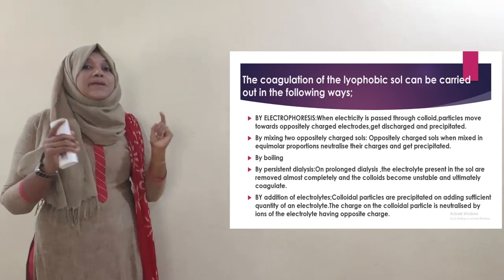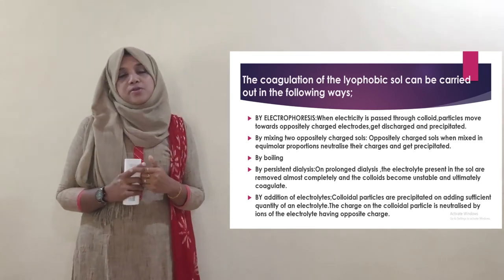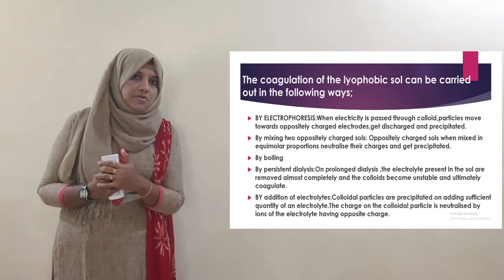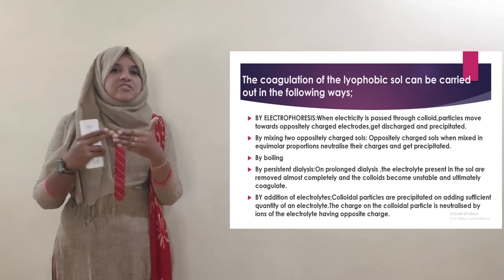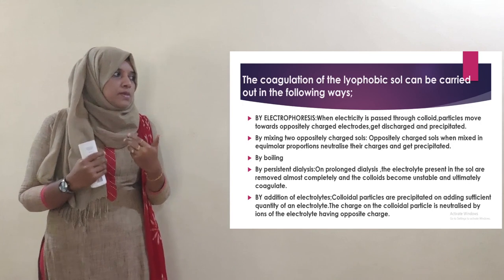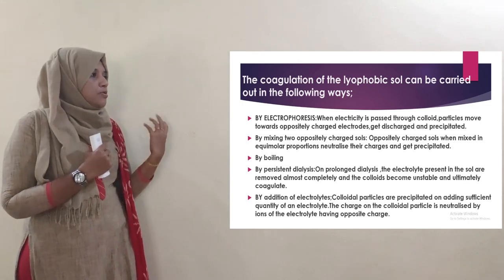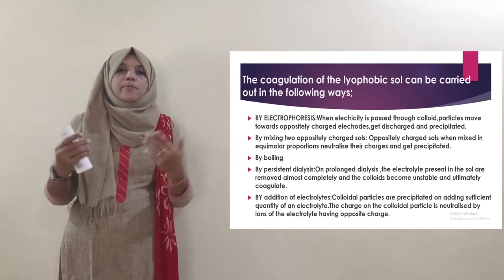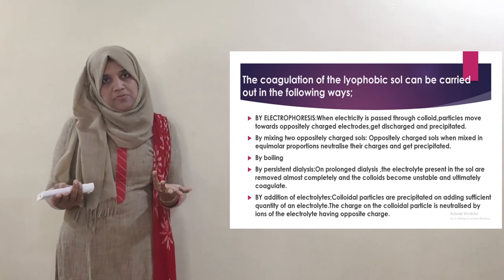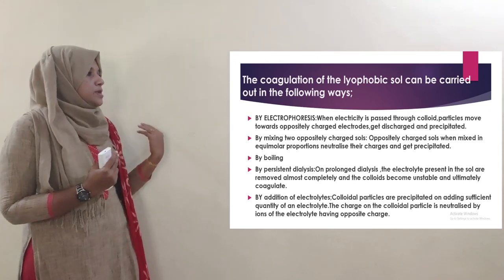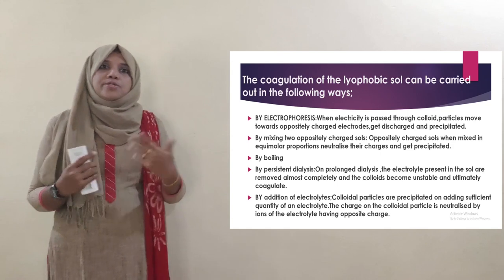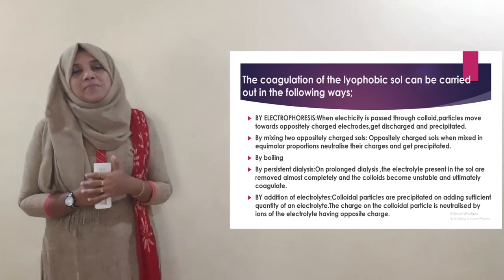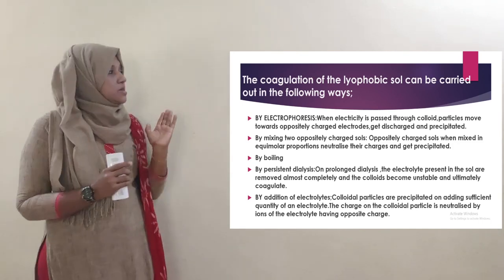Second method: by mixing two oppositely charged sols. When two oppositely charged sols are mixed in proportion, the charges are neutralized and precipitation occurs. This is the second method of coagulation.